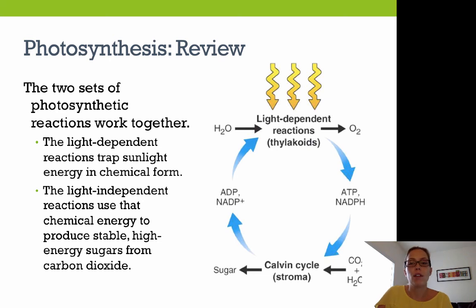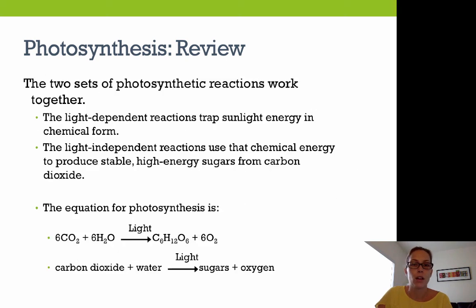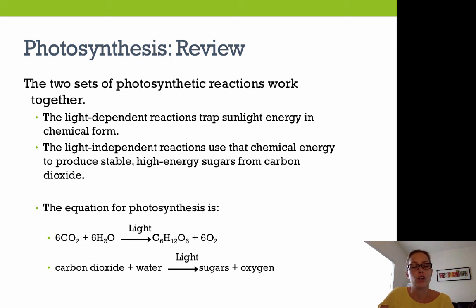In review: there are two sets of photosynthetic reactions that work together. The light-dependent reactions trap sunlight energy in chemical form as ATP and NADPH. The light-independent reactions use that chemical energy to produce stable high-energy sugars — glucose — from carbon dioxide.